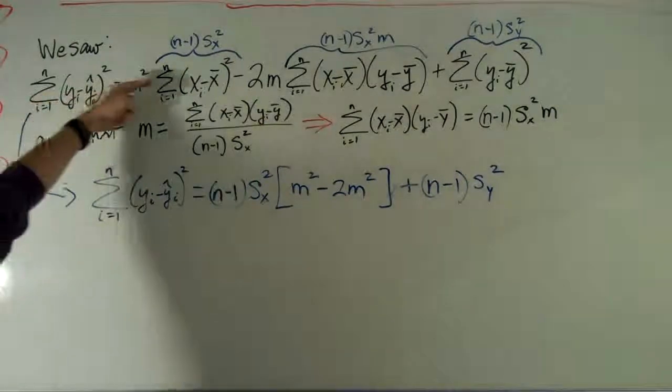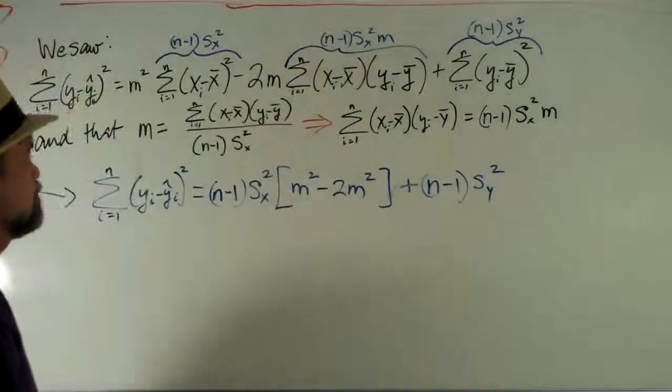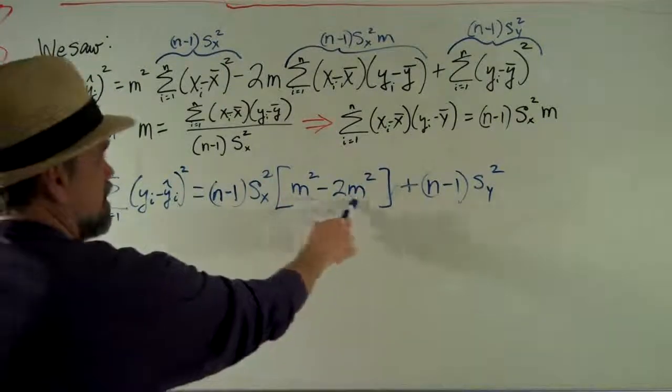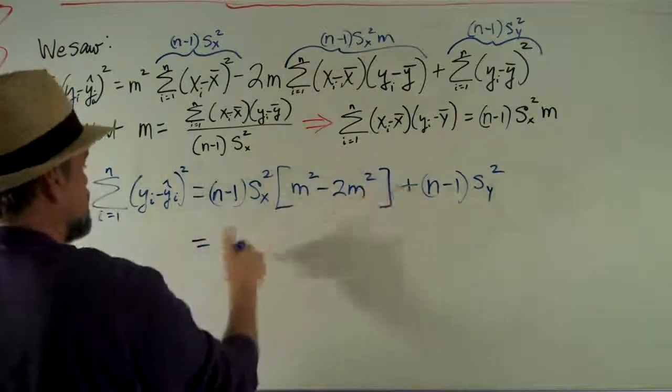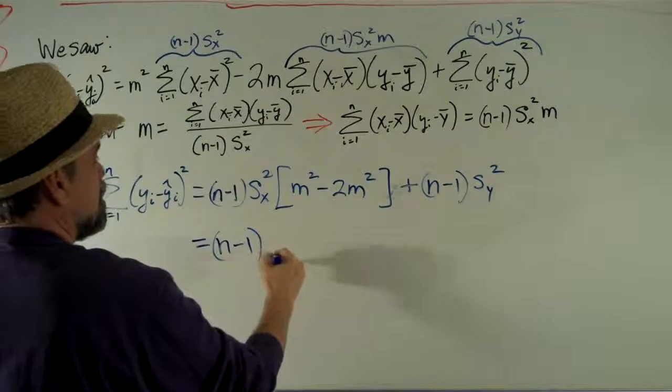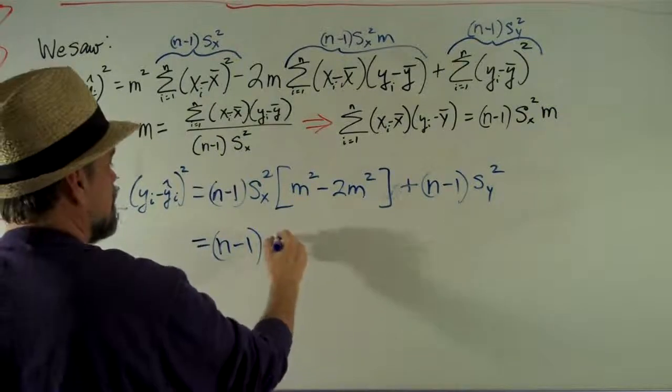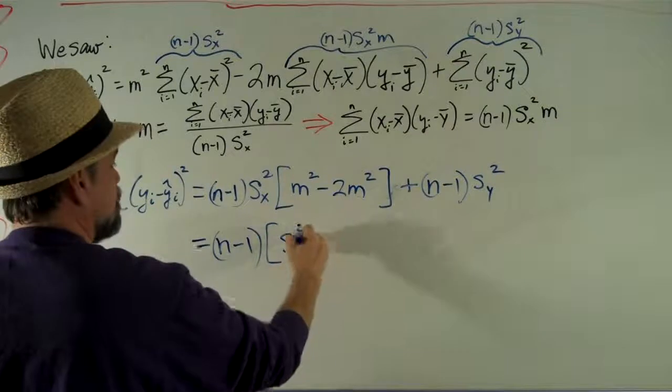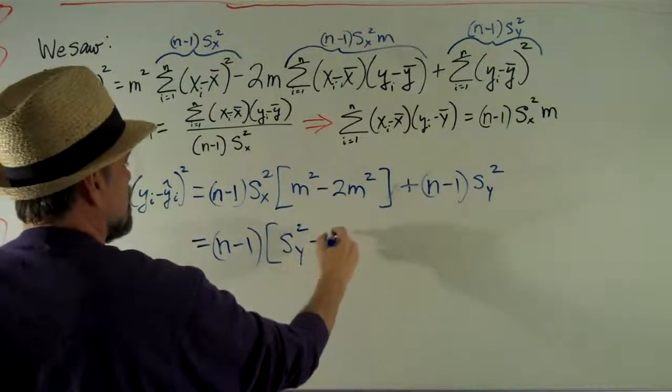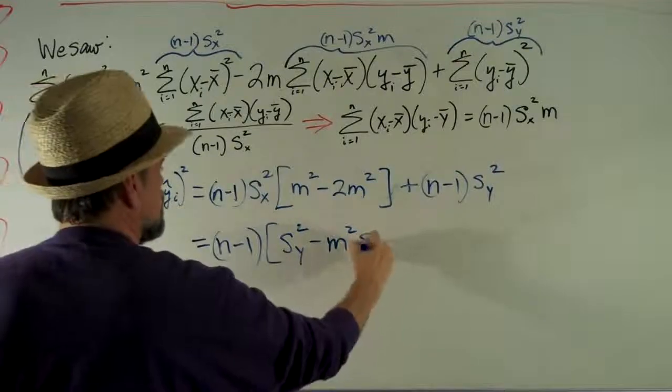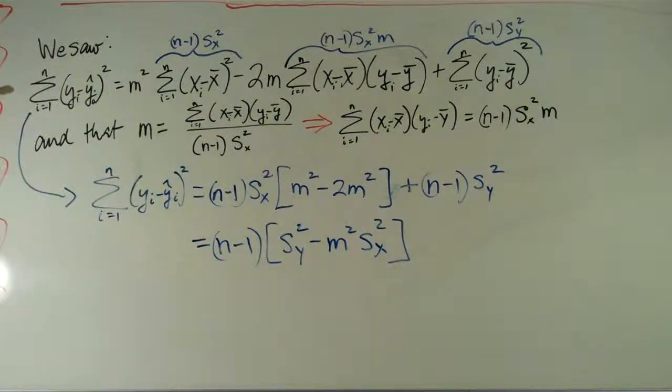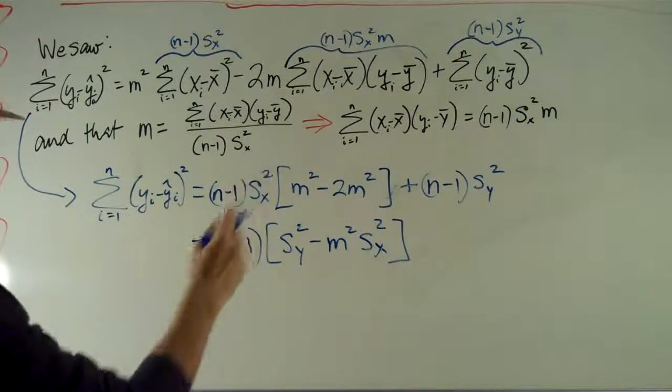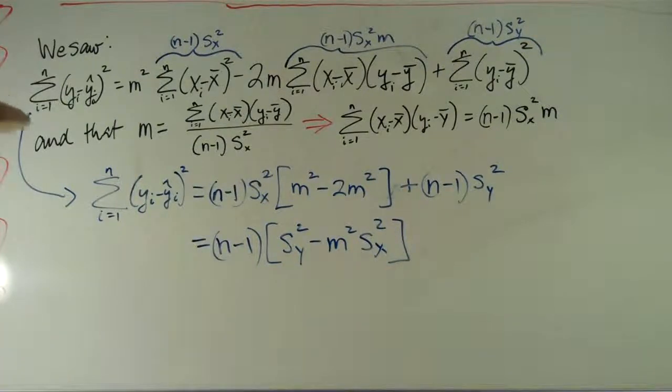I'm rewriting this top line using these substitutions. m squared minus 2m squared, I think I know what that is. So that means this is going to be, let me factor out this n minus 1. n minus 1 times s y squared minus m squared times s x squared. That's what the sum of my squares is using my least-squared regression line. So let's just kind of chew on that for a little bit.